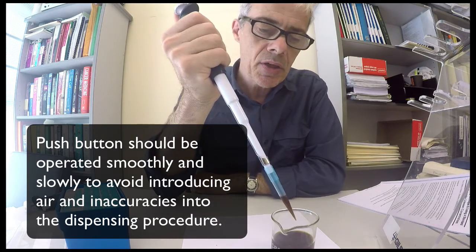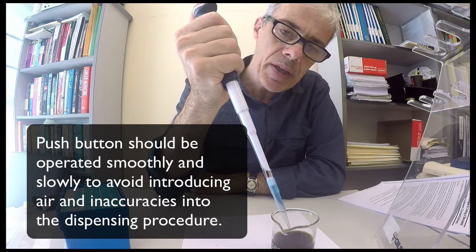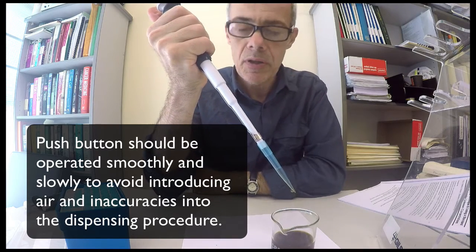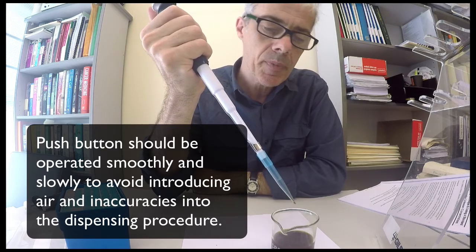To dispense, you go back down to the calibrated stop and then just down to blow out that extra bit of air, put a bit more pressure on it.